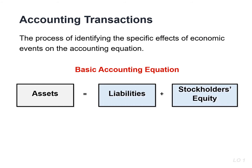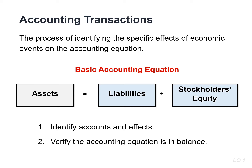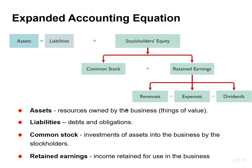Each transaction affects at least two accounts. When analyzing transactions, follow these basic steps: first, identify the accounts and determine the direction of the effect — are these accounts increasing or decreasing? Second, verify the accounting equation is in balance. In Chapter 1, we discuss the financial statements for Sierra Corporation. To illustrate how economic events affect the accounting equation, we will examine events affecting Sierra during its first month. In order to analyze the transactions, we will expand the basic accounting equation to illustrate the impact of transactions on stockholders' equity.